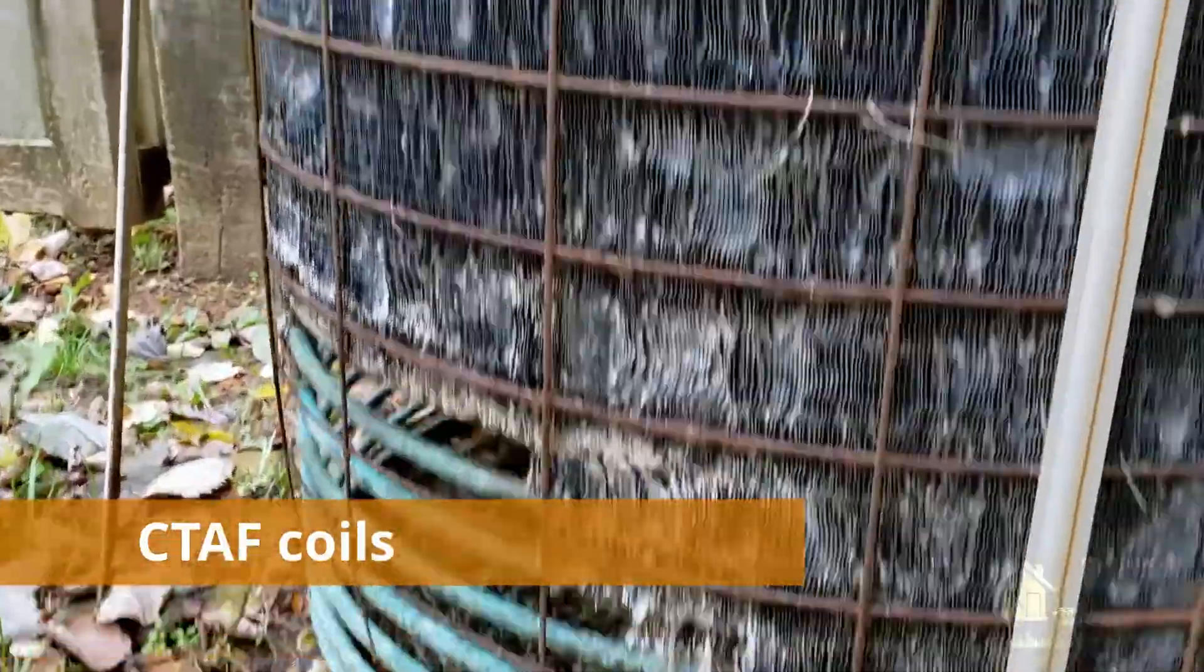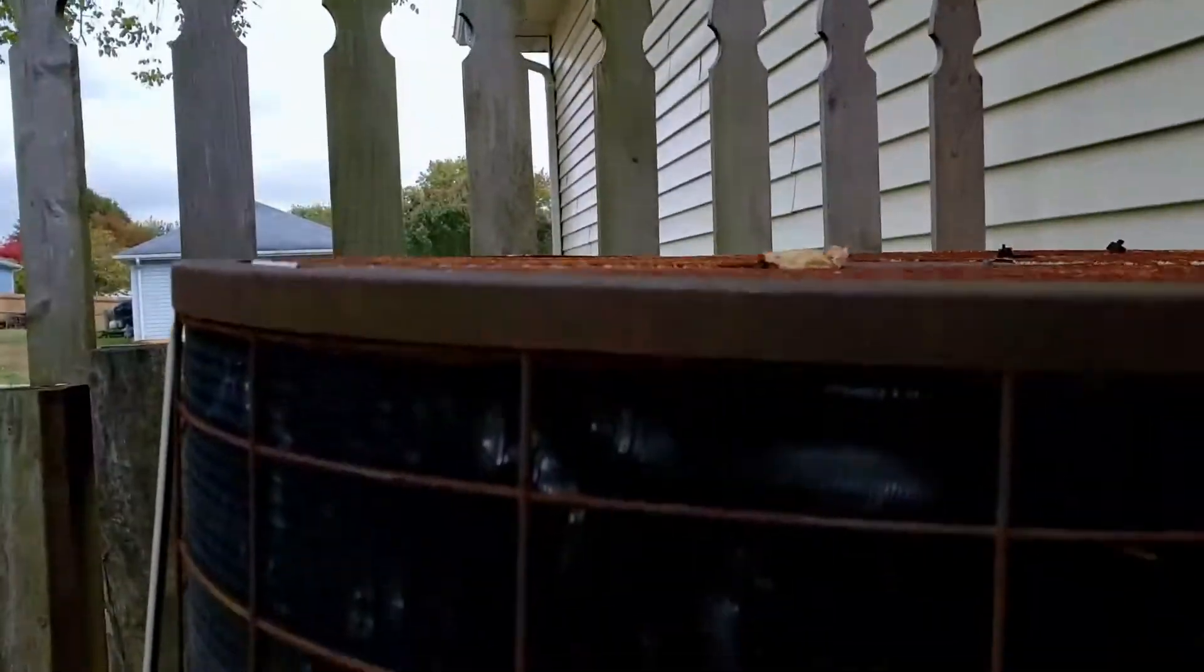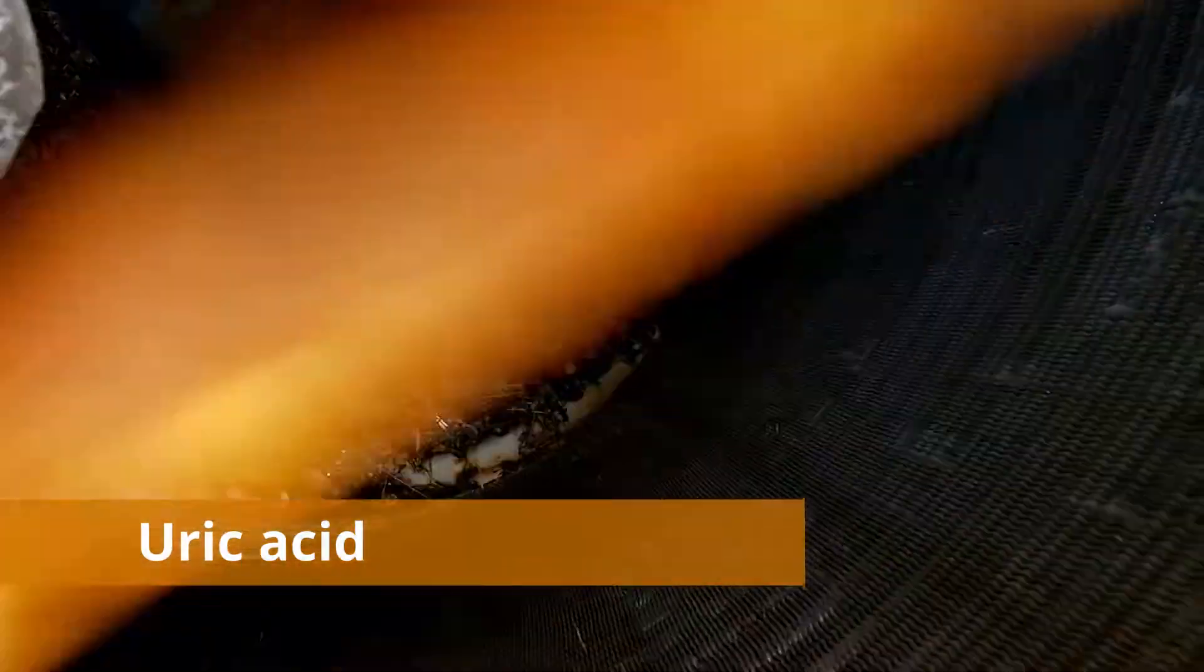The green coils, that's the copper. That's the refrigerant. The outside that's dissolved, that's aluminum. The urea in the pet urine dissolves the aluminum. The aluminum acts like a heat sink.